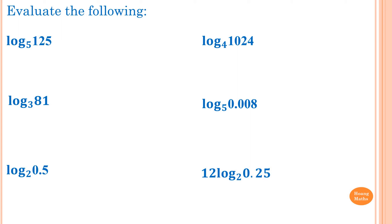Log base 5 of 25: we need to make 25 into 5 to the power of something. So log base 5 of 5 to the power 2 — because 5 to the power 3 is 125, so 5 squared is 25. The answer is equal to 2.